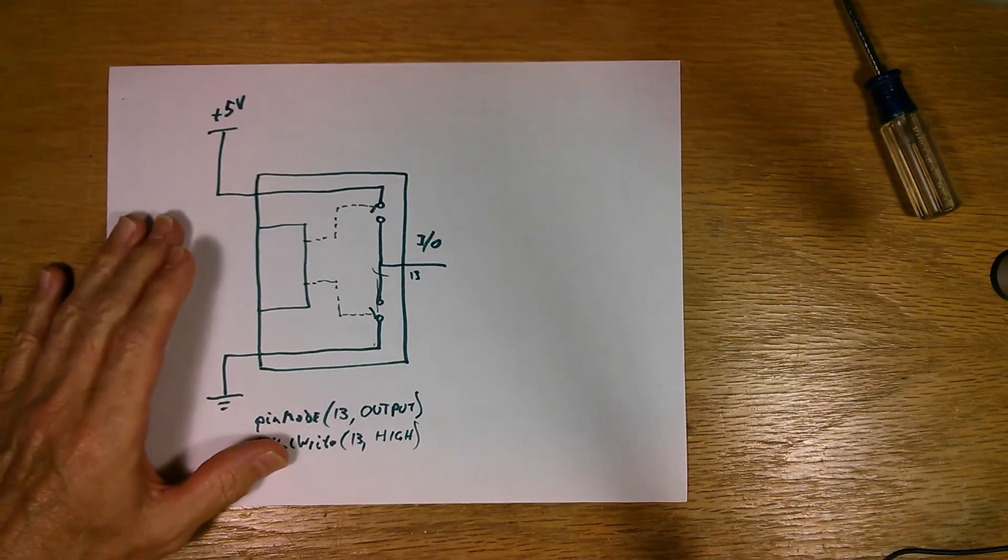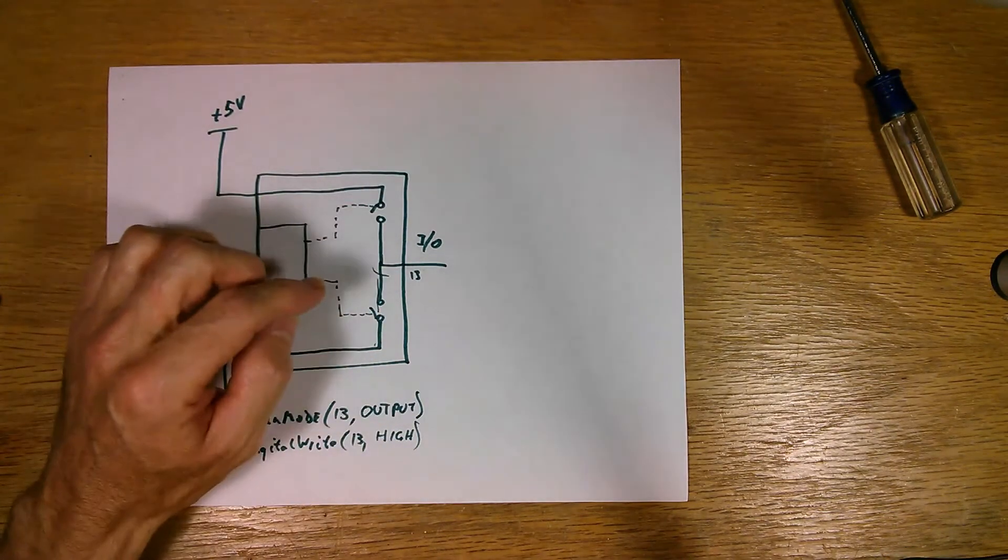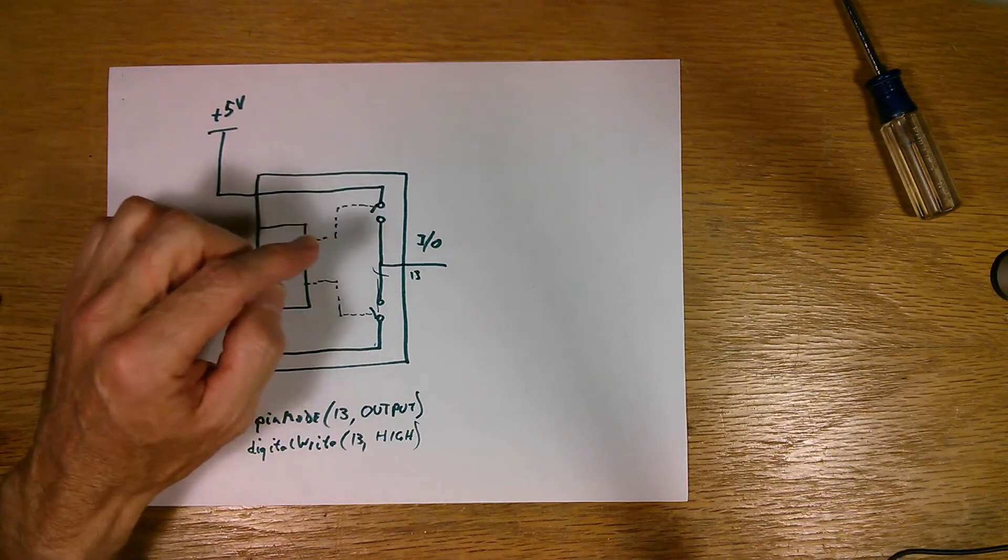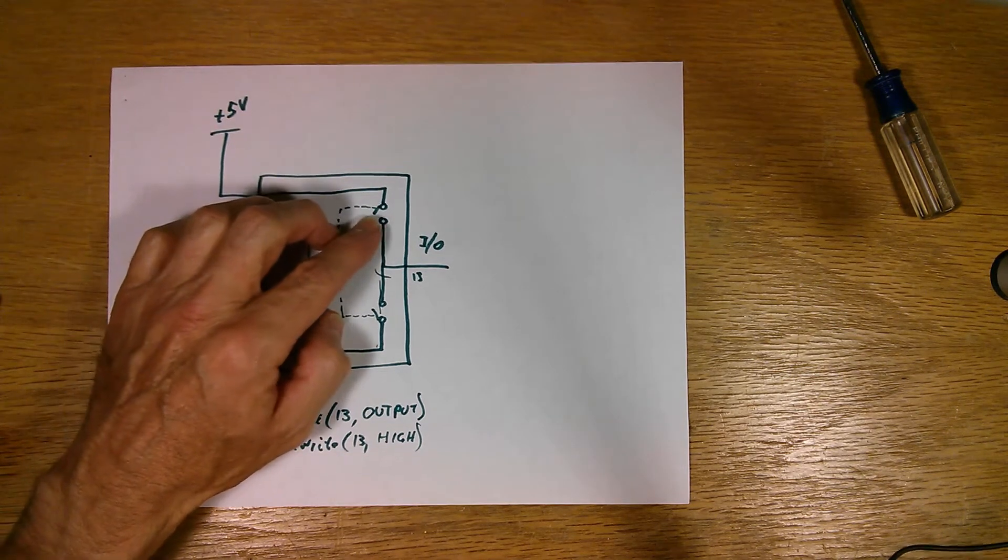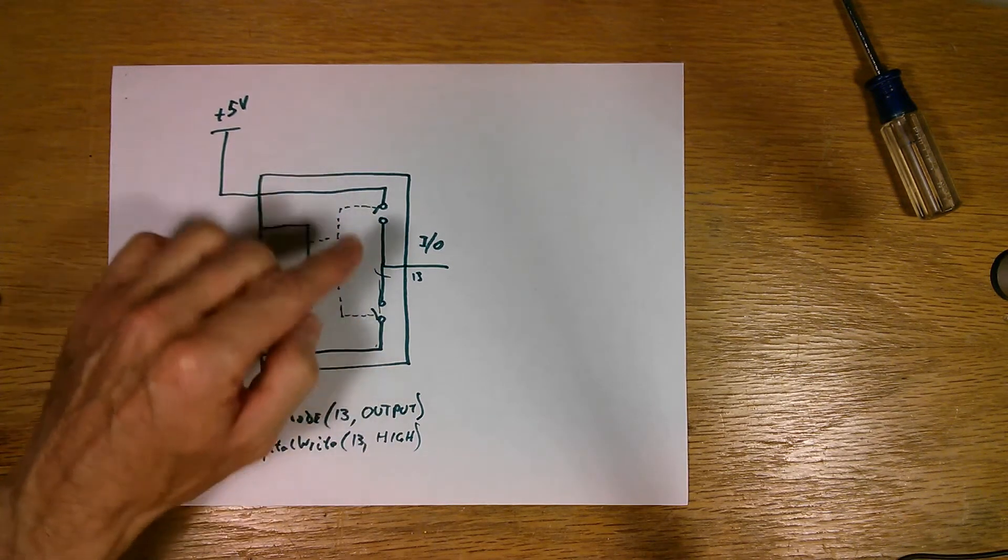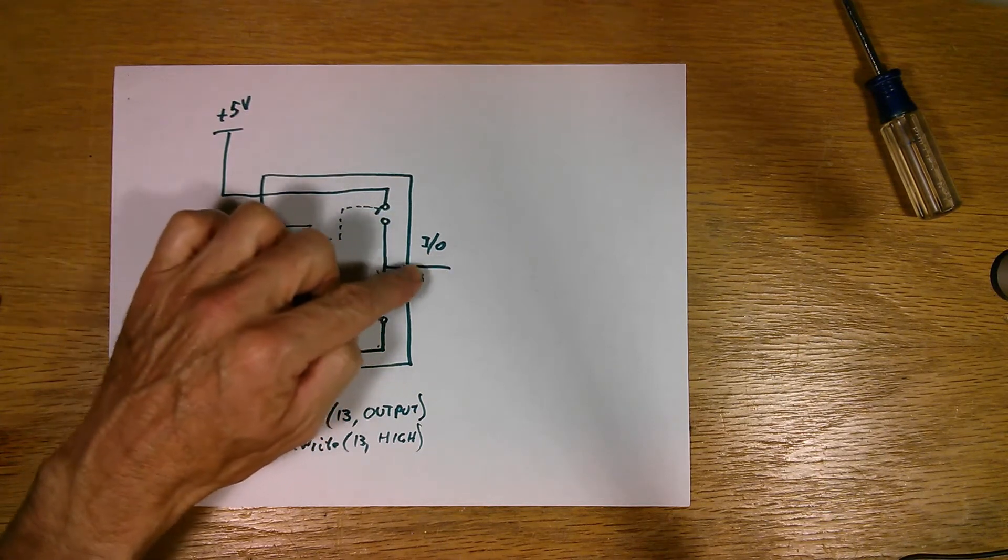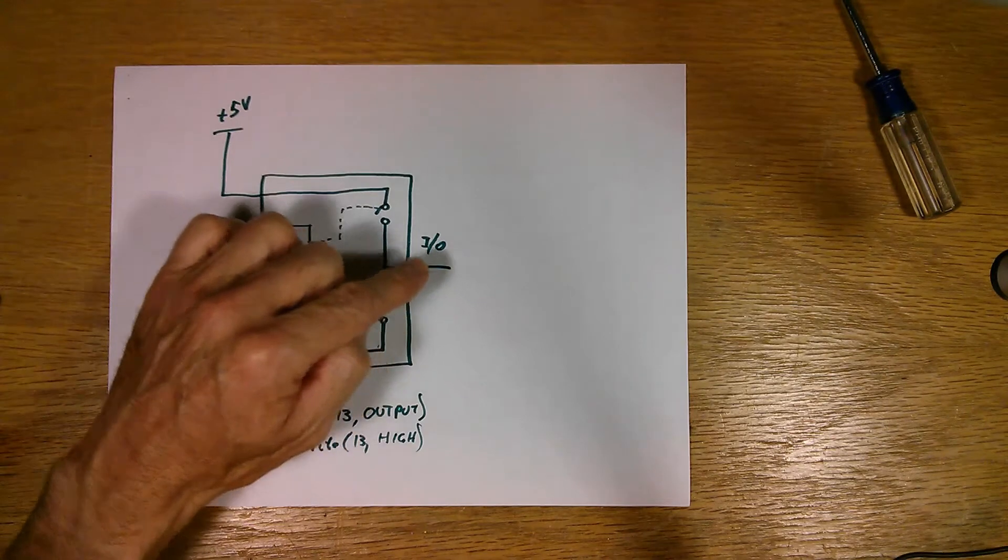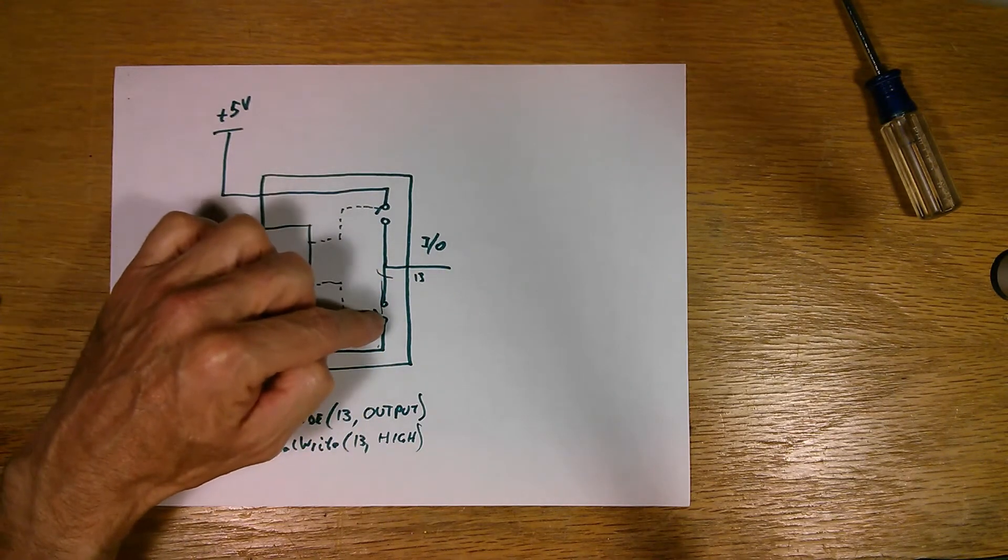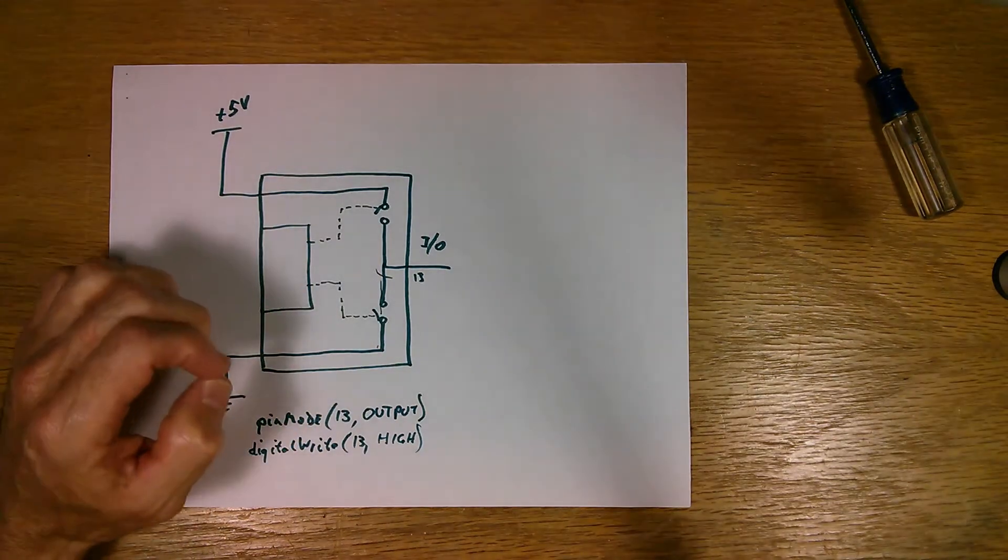To control this I/O pin, if you want to make it go high, or to 5 volts, you'd write code. But what happens inside the microcontroller is this switch turns on and it connects the I/O pin to 5 volts. If you want it to go low, this switch down here will be turned on and it will be connected to ground.